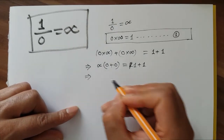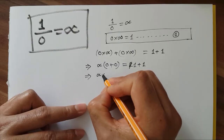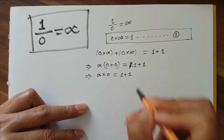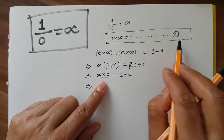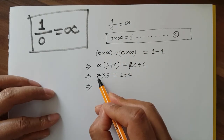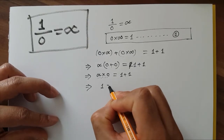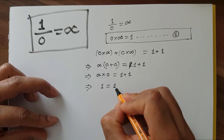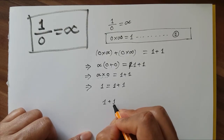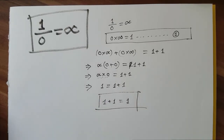Now 0 plus 0 equals 0, and we know from equation 1 that 0 times infinity equals 1. So I can rewrite: infinity times 0 equals 1, and the right-hand side is 1 plus 1. This means 1 plus 1 is equal to 1 — which is interesting! How is this possible?